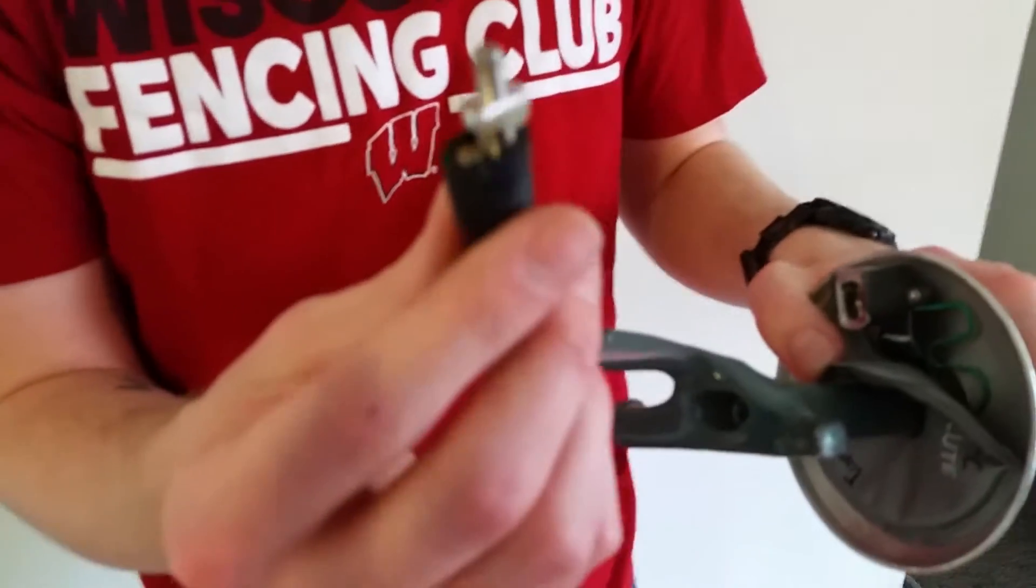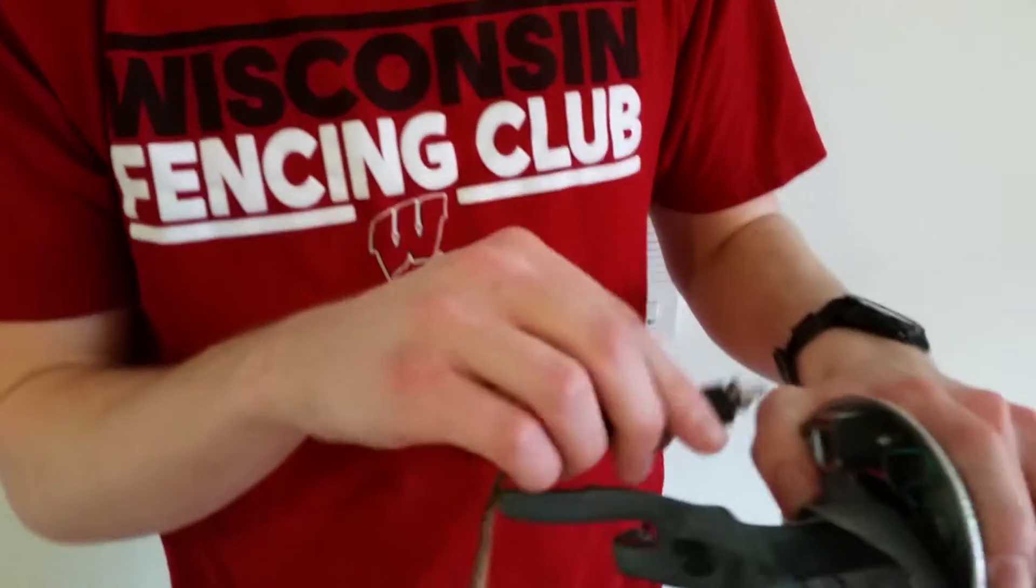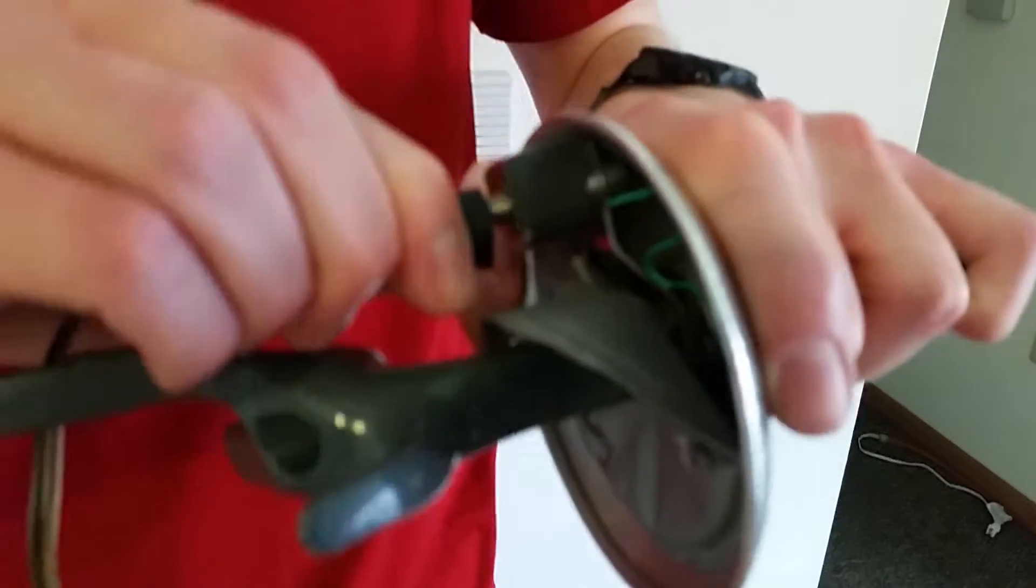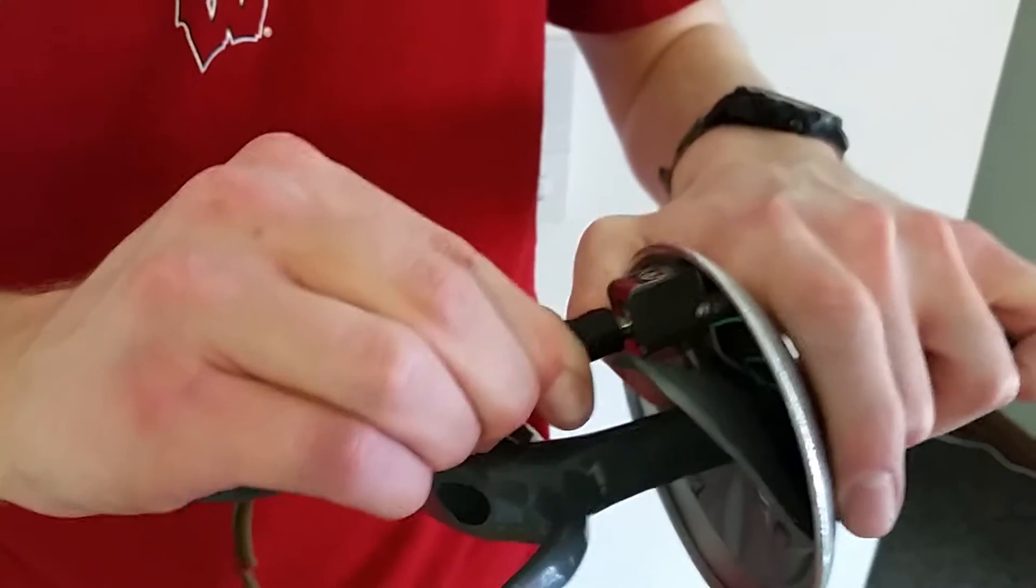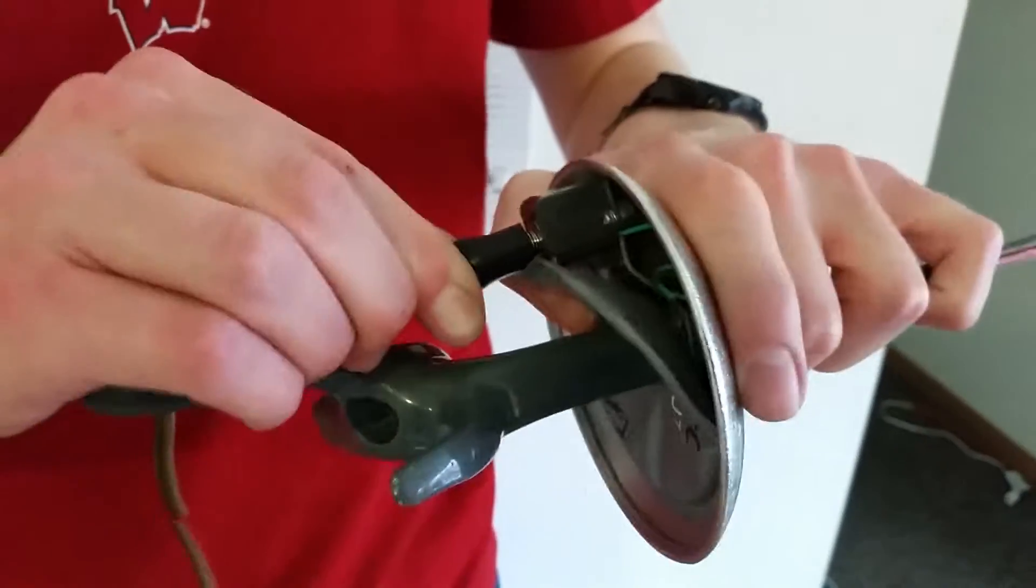And so you have a bayonet body cord that looks like this, that plugs into here, and then twists to stay in there. And it's a pretty good method of keeping it in there, you see there's no wiggle at all.